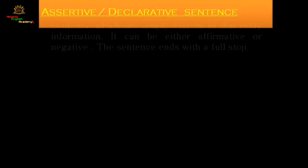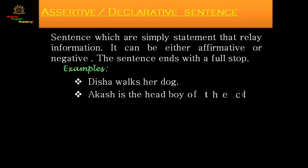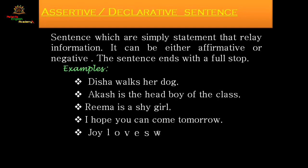Declarative sentences are simply statements that relay information. They can be either affirmative or negative. These sentences give information about facts, opinions, and beliefs. This type of sentence is used most commonly in books, informative articles, reports, as well as in essays.